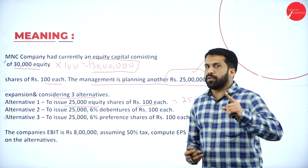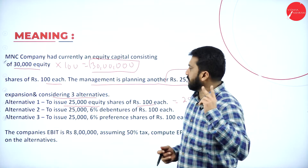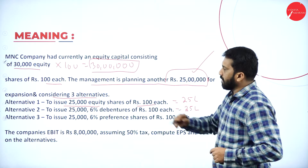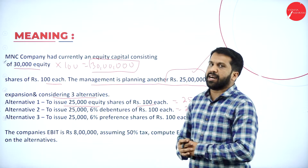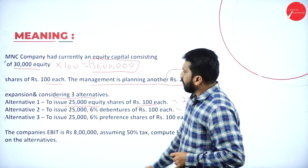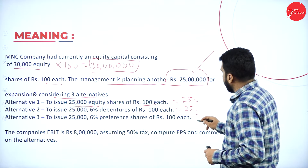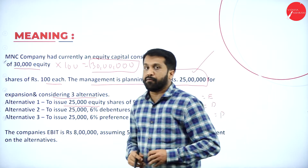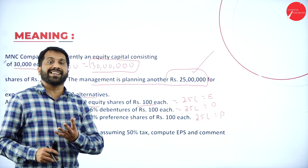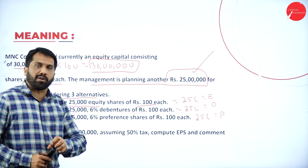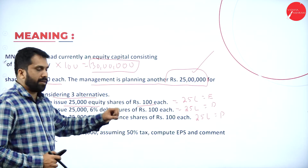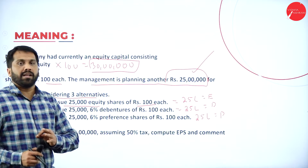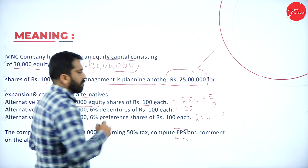You have three options to raise 25 lakh. Option one: issue 25,000 equity shares of rupees 100 each — 25,000 into 100 gives you 25 lakh. Option two: issue 25,000 debentures of 100 each — don't go for equity, go for debenture. Option three: issue 25,000 preference shares of 100 each. So the three alternatives are equity, debenture, and preference — whichever gives more earning per share will be better.